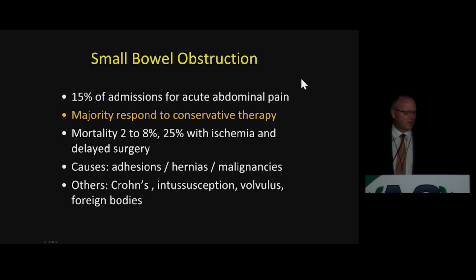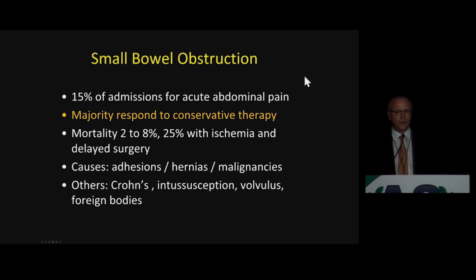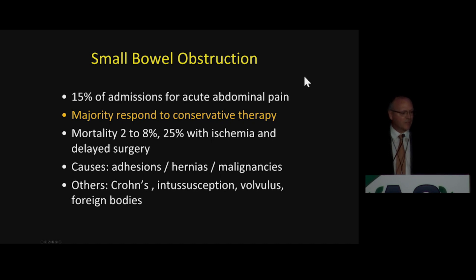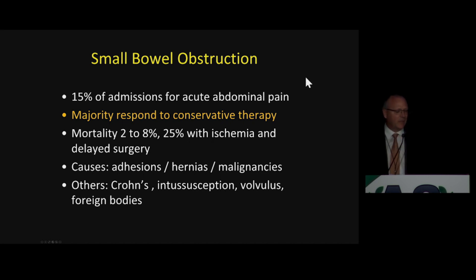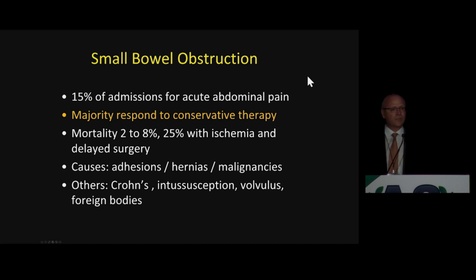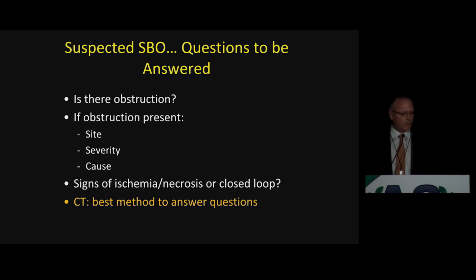And then not too much on the specific causes of obstruction. This is a very important and common cause of admission to our EDs — 15% of those presenting with acute abdominal pain have suspected or confirmed bowel obstruction. The majority respond to conservative therapy, and that's important as we understand what the role of imaging and CT really is. Mortality varies between 2 and 8%, 25% with the presence of ischemia and delayed surgery. 70% of all cases of bowel obstruction are caused by adhesions, very relevant as this determines how and when to use CT. The two most common other causes are hernias, malignancies, and then others as shown on the slide.